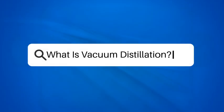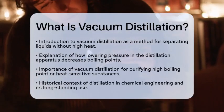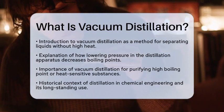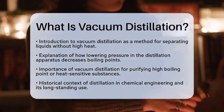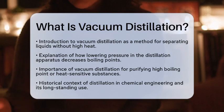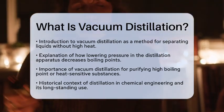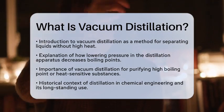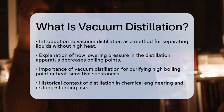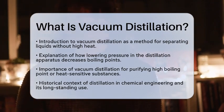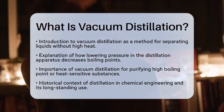What is vacuum distillation? Have you ever wondered how scientists separate different liquids without using high heat? Today, we will uncover the fascinating method known as vacuum distillation. This technique is a clever way to separate components in a liquid mixture by lowering the pressure inside the distillation apparatus. When the pressure drops below atmospheric levels, the boiling points of the liquids decrease, meaning they can vaporize at lower temperatures than they would normally require.